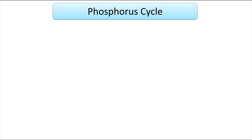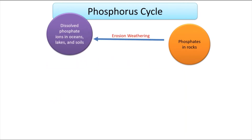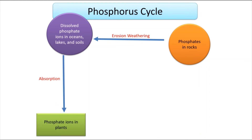Now looking into the phosphorus cycle. This is again a cycle — we can start from anywhere, but for this video we'll start from phosphates present in rocks. We have phosphates inside rocks, and erosion and weathering occur, which breaks down the rock. The phosphates present inside the rock would then be dissolved in oceans, lakes, and soil. From the soils, absorption of those phosphate ions would occur — plants could absorb these phosphate ions.